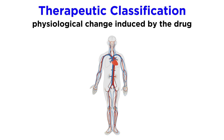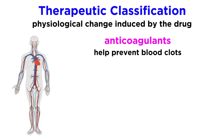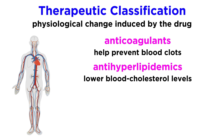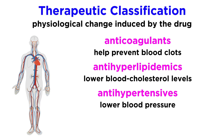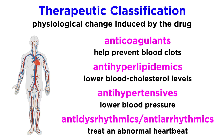Looking at therapeutic classification, let's mention some classes of drugs that deal with the heart and blood vessels. Anticoagulants are drugs that help prevent blood clots. Anti-hyperlipidemics lower blood cholesterol. Anti-hypertensives lower blood pressure. Anti-arrhythmics treat an abnormal heartbeat. So as you can see, this type of classification describes the clinical purpose, or the physiological change induced by the drug, and does not describe anything about the way the drug achieves this change.